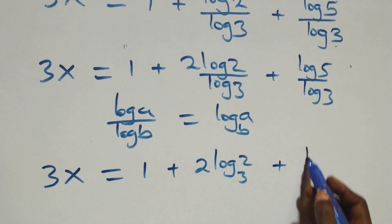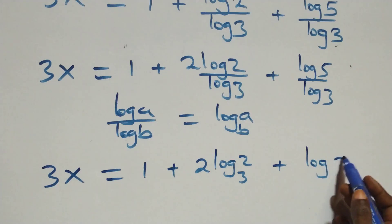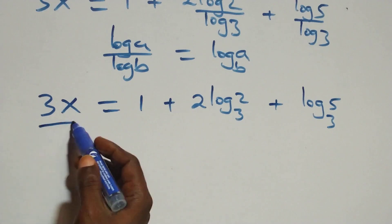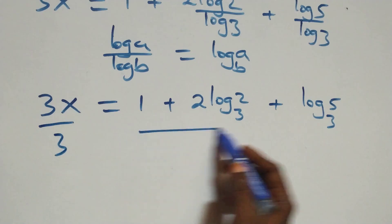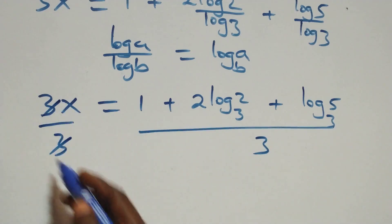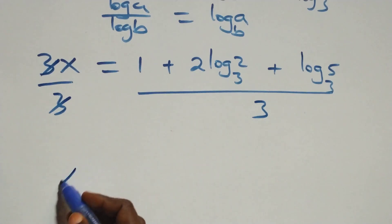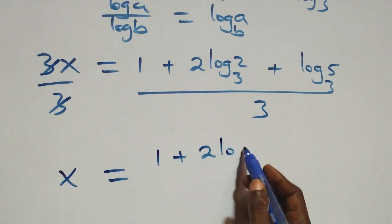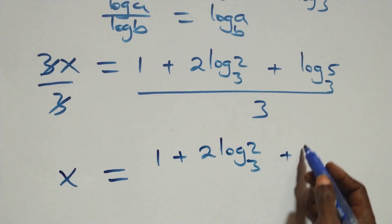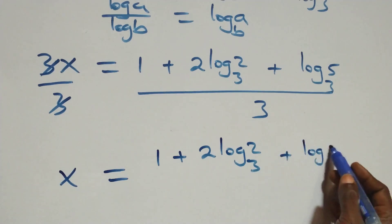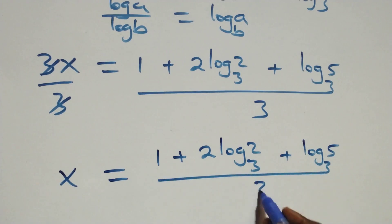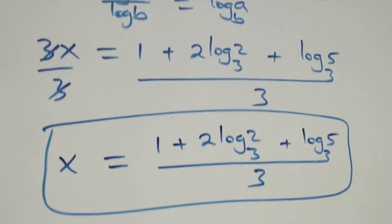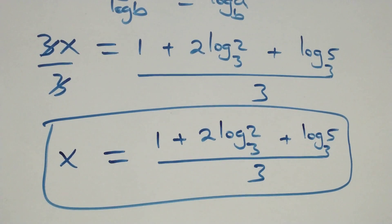Applying change of base, log two over log three becomes log base three of two, and log five over log three becomes log base three of five. Then we divide both sides by three, and the threes cancel. We have x equals one plus two log base three of two plus log base three of five, all over three.